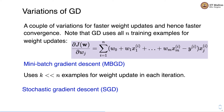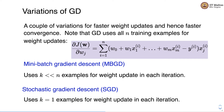Mini-batch gradient descent uses k examples, which is much less than n, for the weight update in each iteration. Whereas stochastic gradient descent uses exactly one example for the weight update in each iteration.